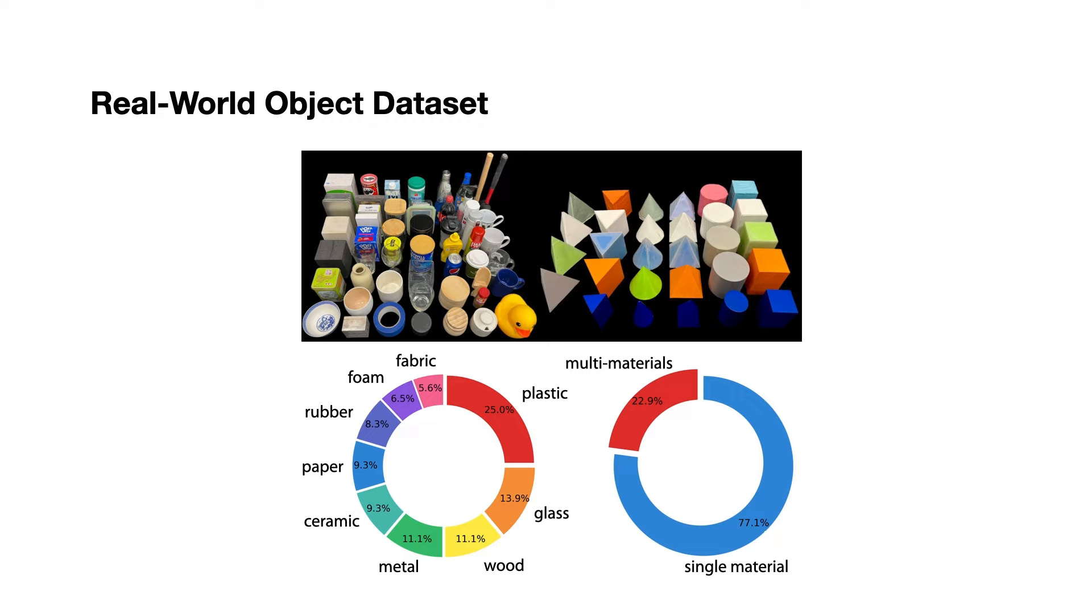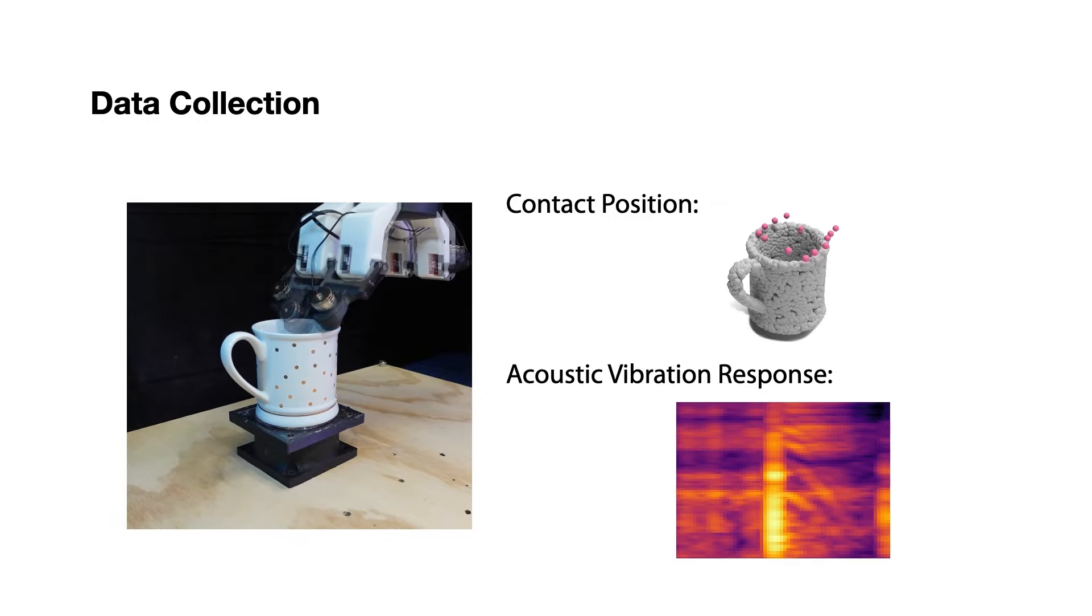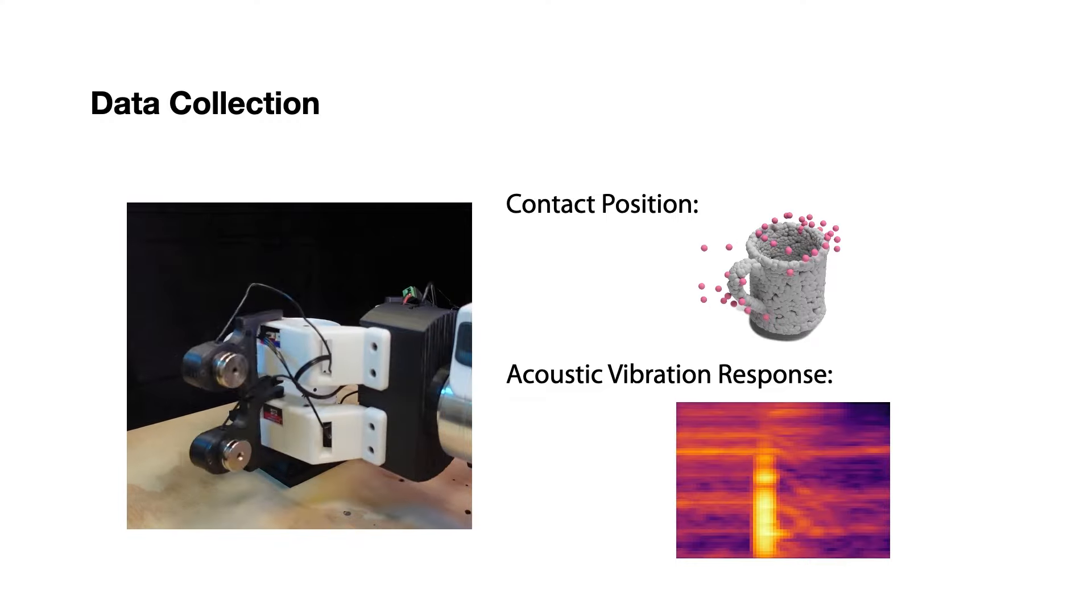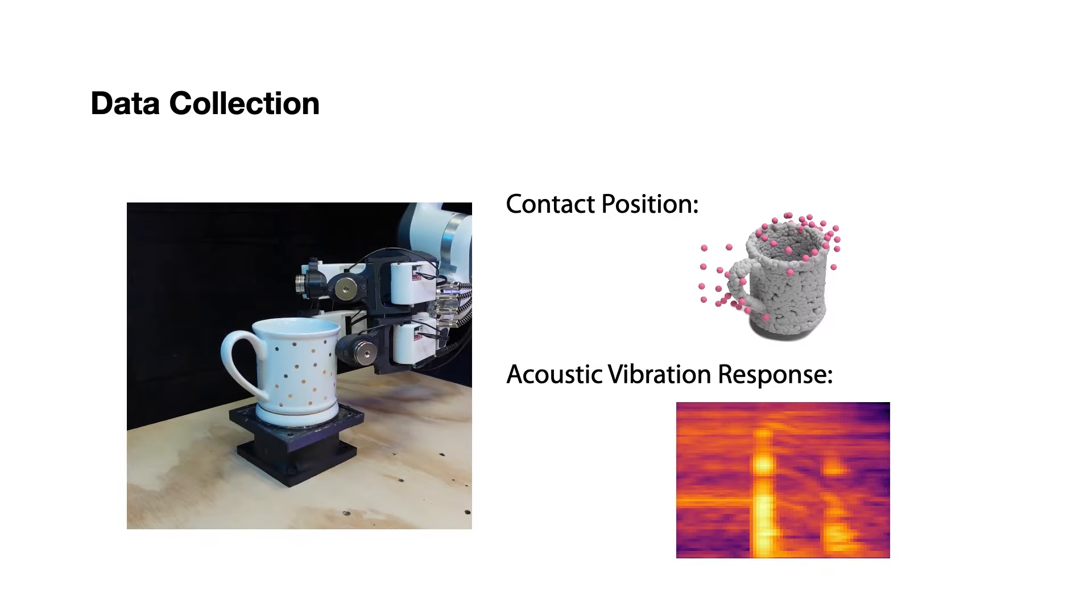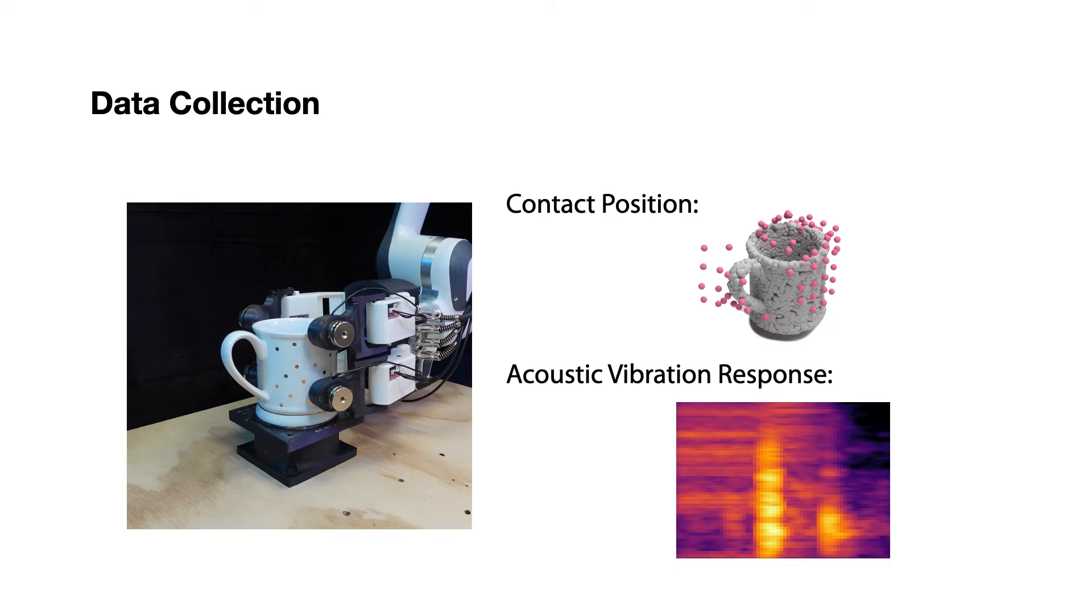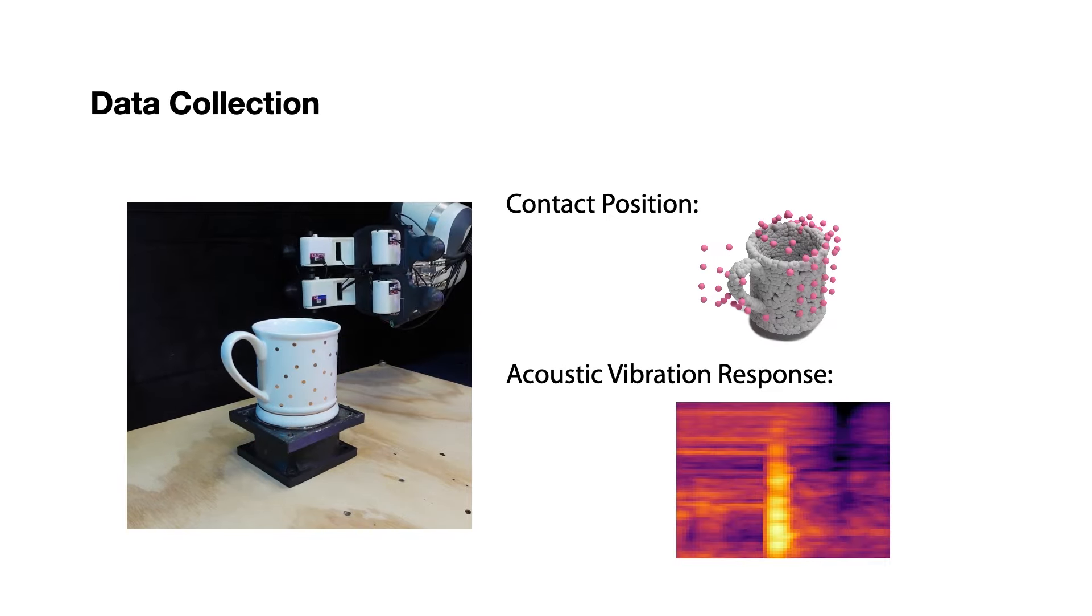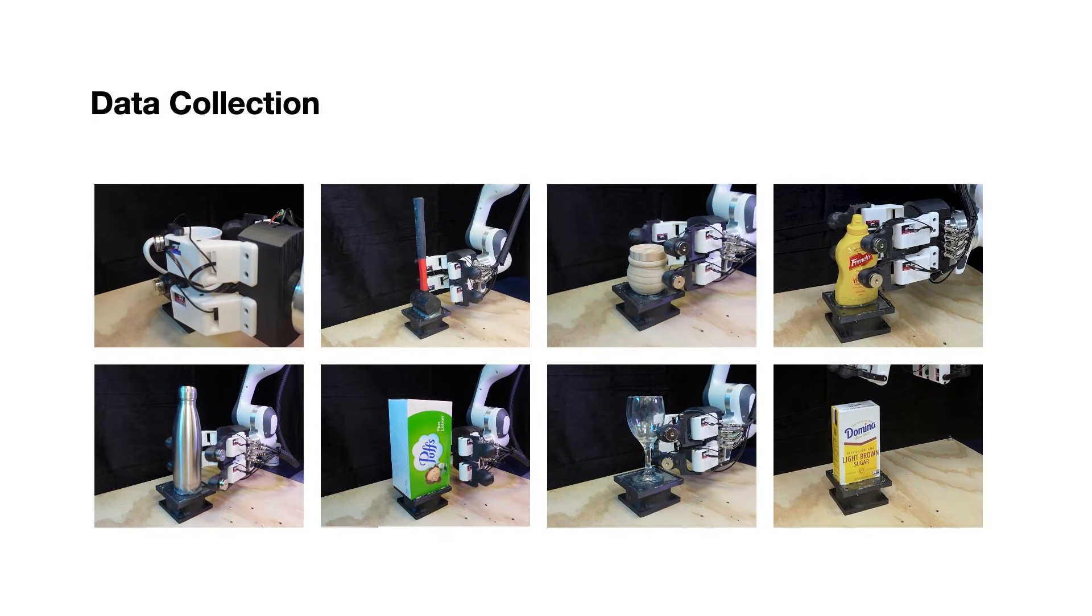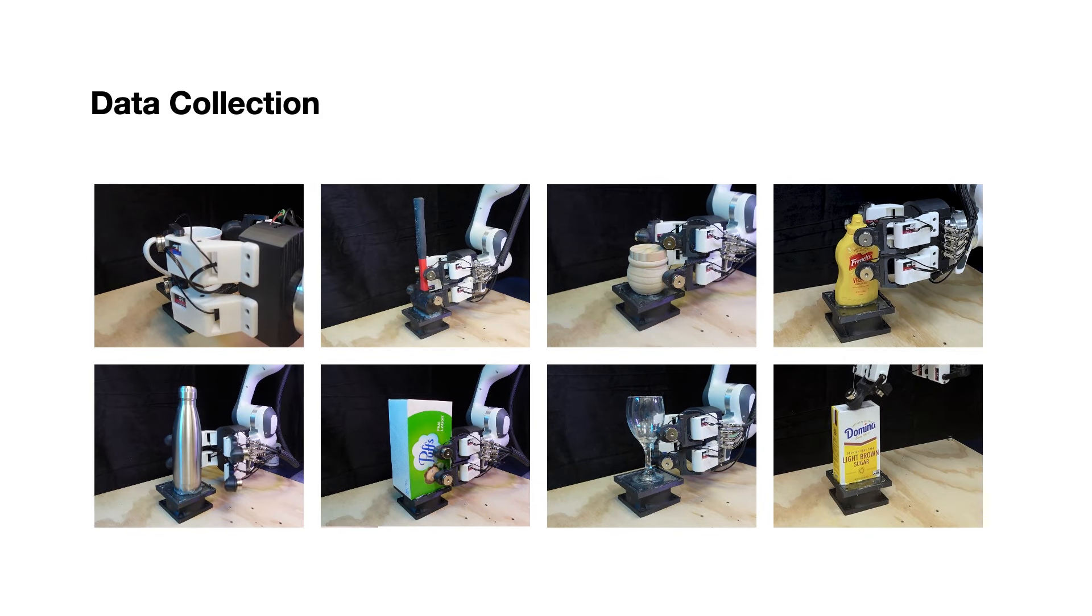In more challenging object perception tasks, we developed a dataset with 83 diverse real-world objects. Our objects cover nine material categories and a variety of geometries from simple primitives to complex shapes. Unlike previous work that uses humans to manually hold the robot's hand to interact with objects or design fixed interaction poses and forces for replay, we derive a simple but effective heuristic-based interaction policy to autonomously collect the acoustic vibration response of objects. Our policy works well for all our real-world objects covering variable sizes and geometries.